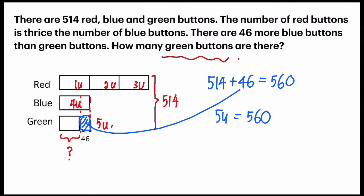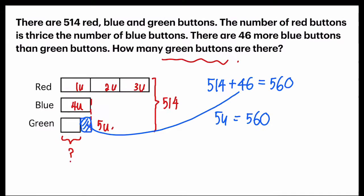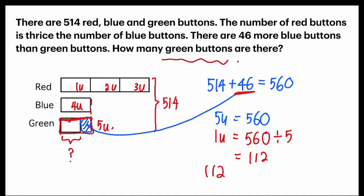What am I finding? I'm finding green buttons. So next step, I have to find 1 unit. I'll take 560 divided by 5, and I will get 112. But is my answer 112? Think about it — 112 is the entire box here, which also includes the blue color portion of 46. So my last step is to take 112 minus 46.